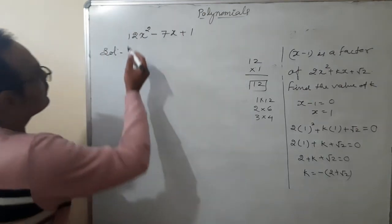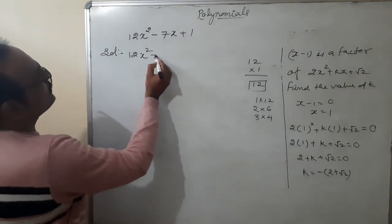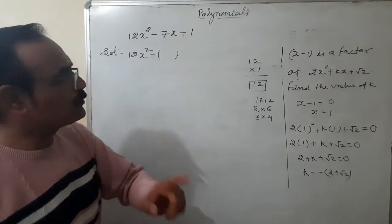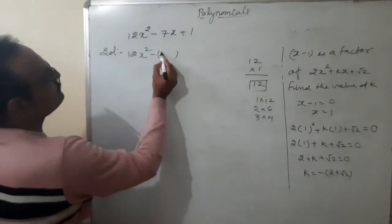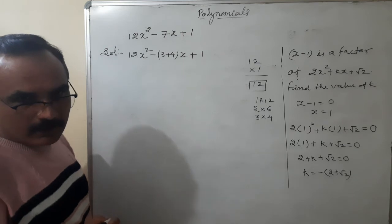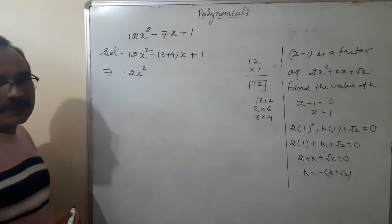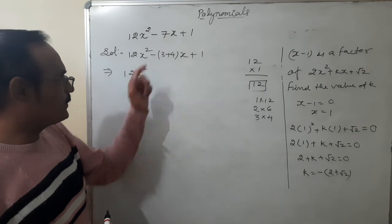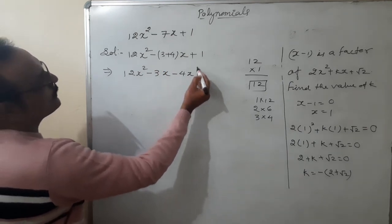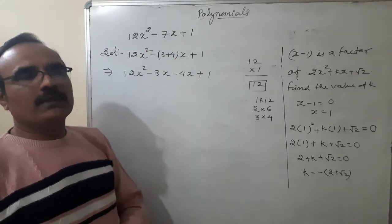So we write: 12x² minus 3x minus 4x plus 1. After opening the bracket: 12x² minus 3x minus 4x plus 1. Now we have four terms and we try to take common factors. We can write 12 as 3 times 4, so 12x² minus 3x minus 4x plus 1 becomes 3x(4x minus 1) minus 1(4x minus 1).